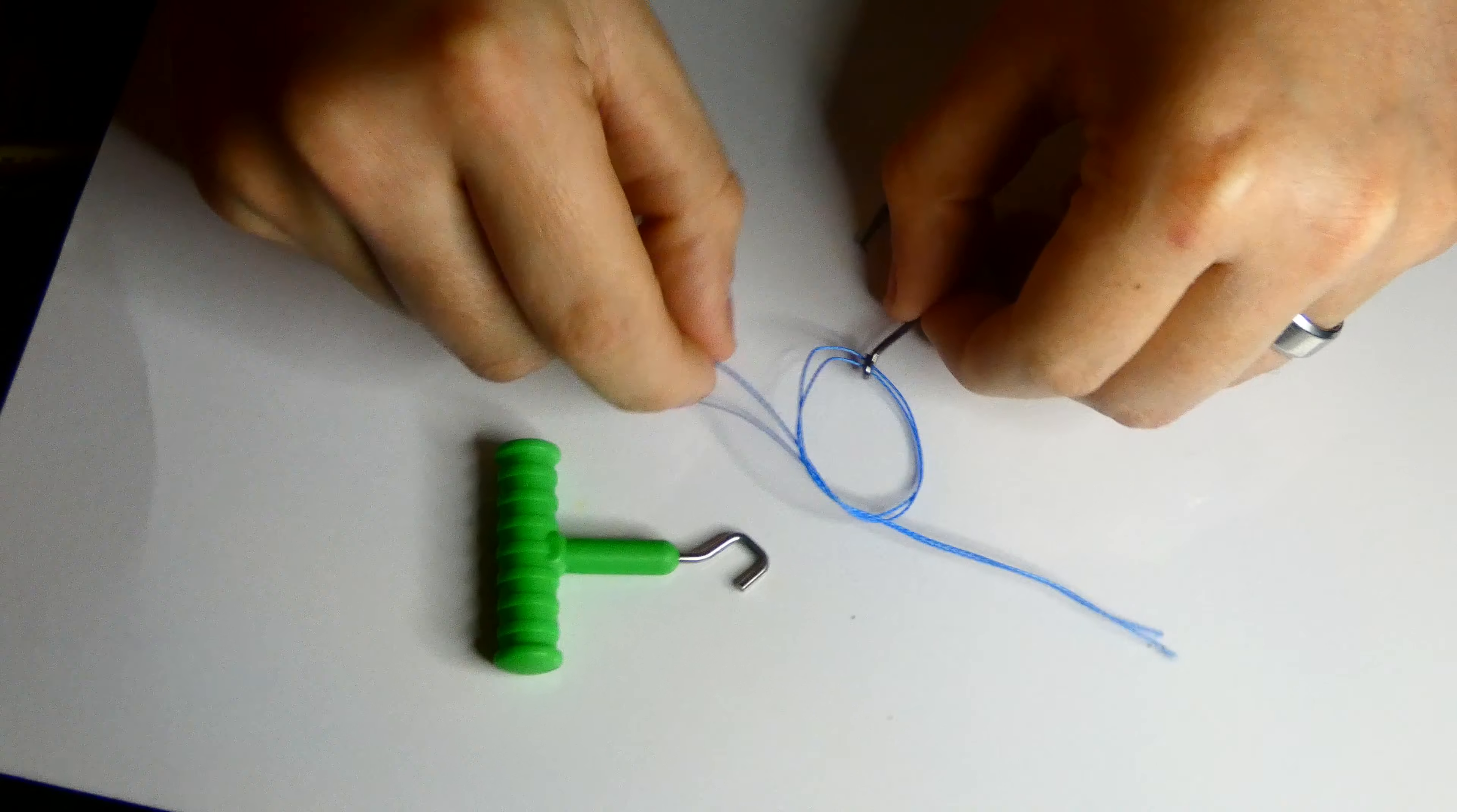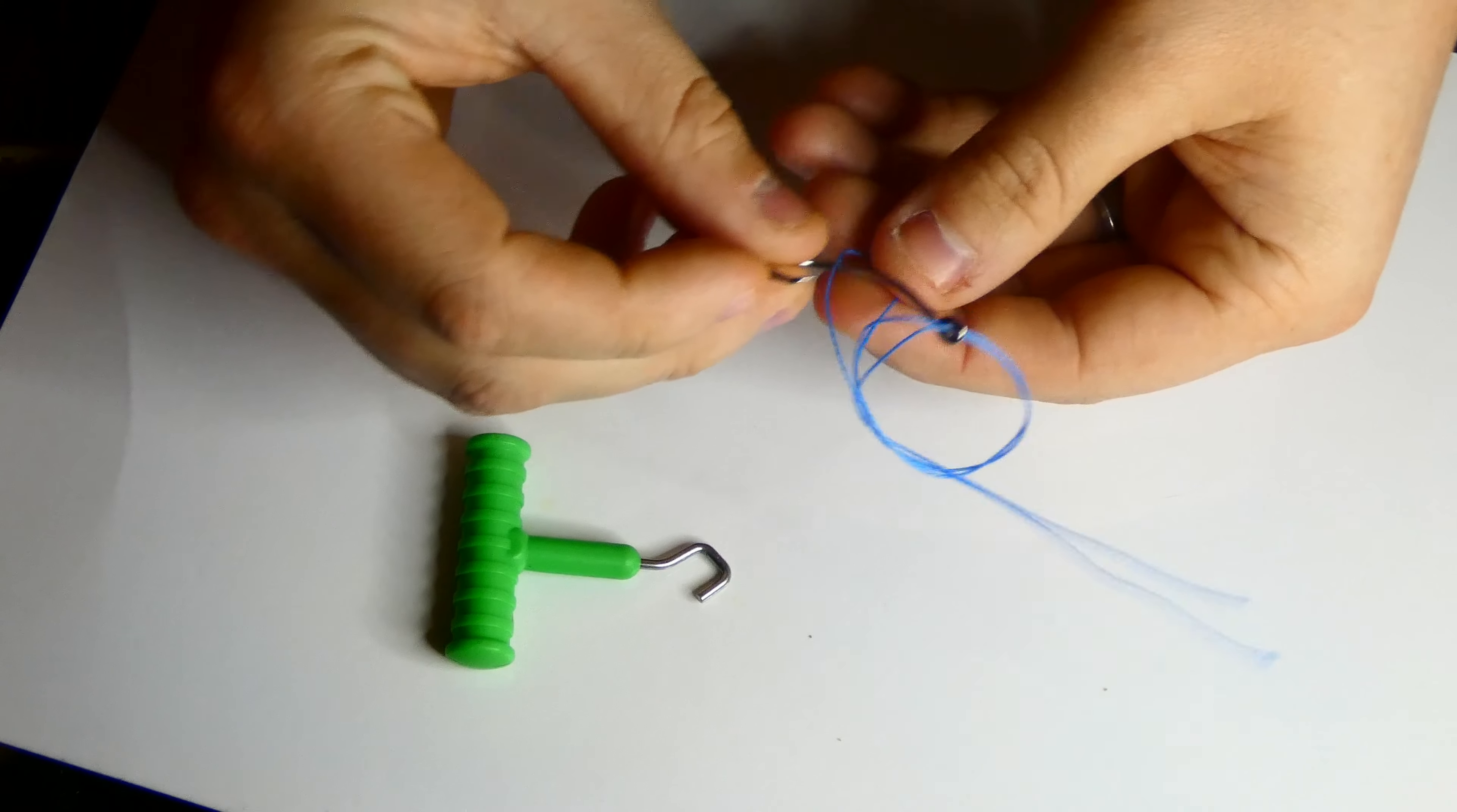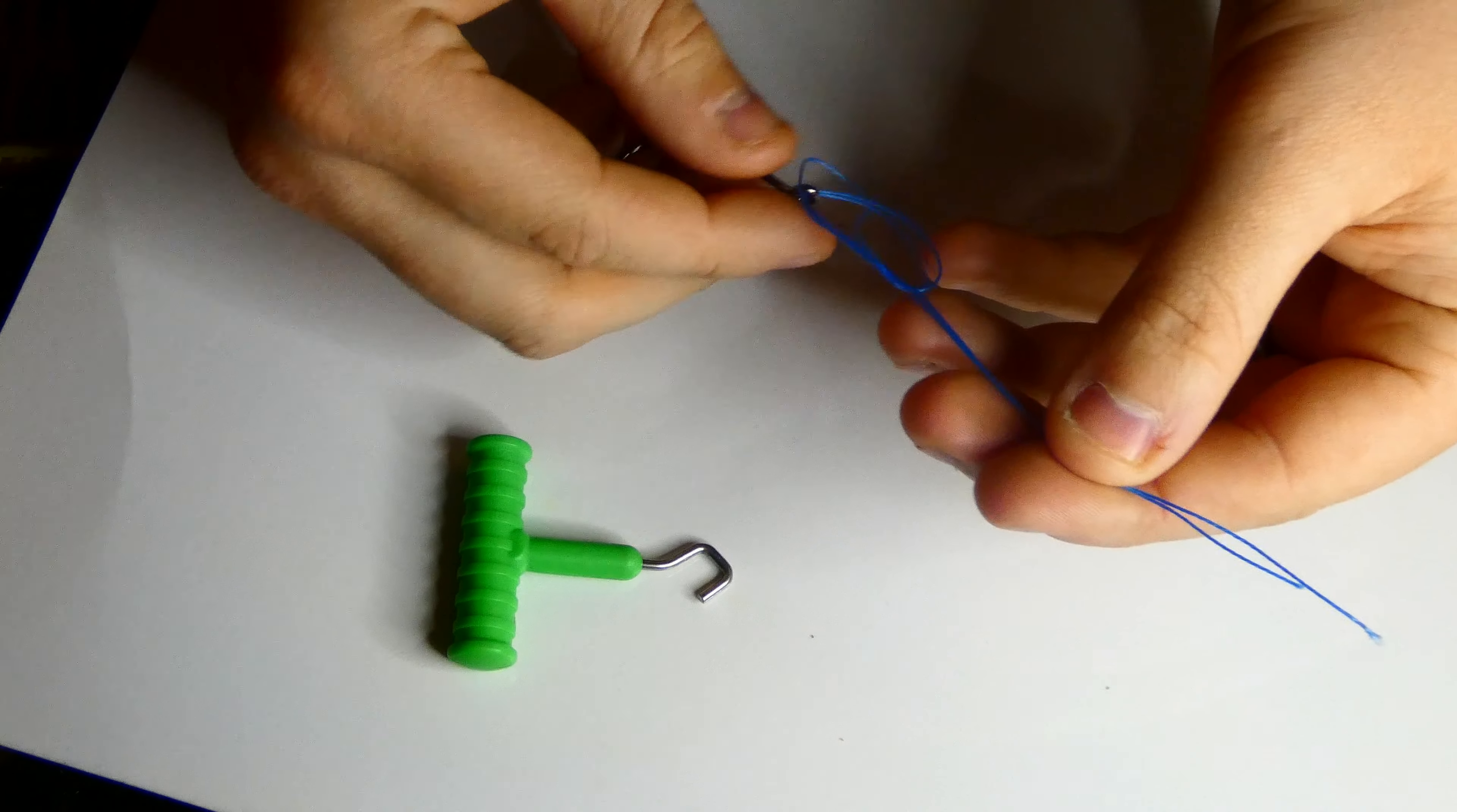And then you're going to run the side with the loop through the front of your hook. And then after you do that, you're going to take the side with the two bare lines and just pull it tight.